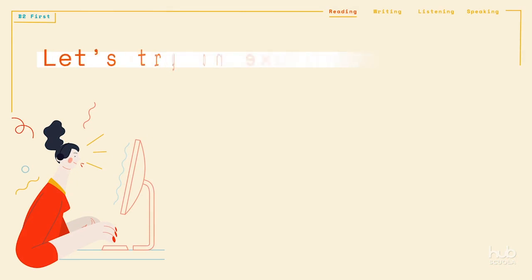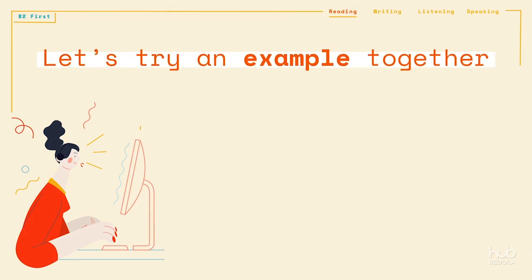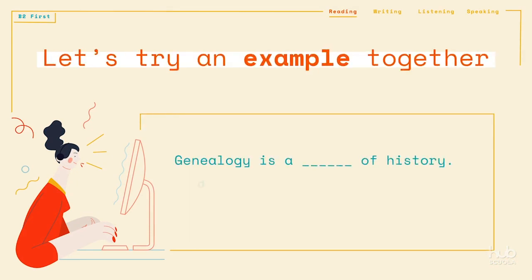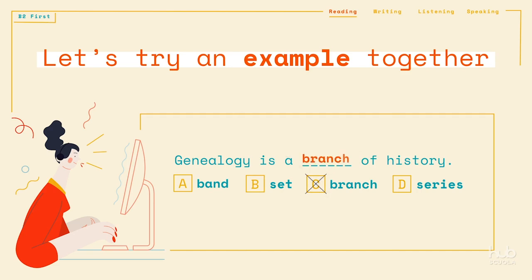Let's try an example together. The best answer to complete this sentence is C, "branch." Genealogy is a branch of history.